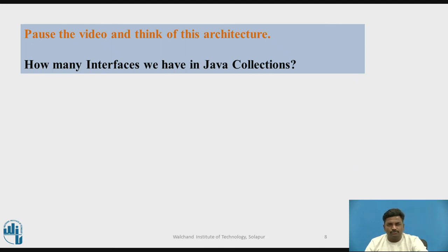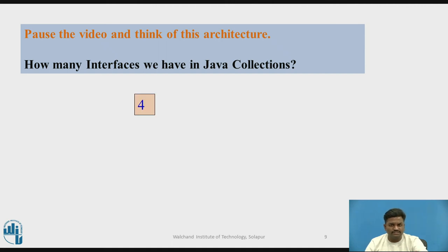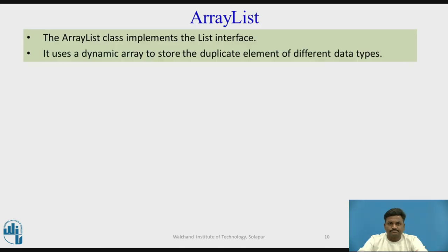Here is a small question: how many interfaces do we have in Java collections? Just now we have seen it. If you are not able to answer, you can rewind this video and see. The answer is four — we have four interfaces: Set, List, Queue, and Map.